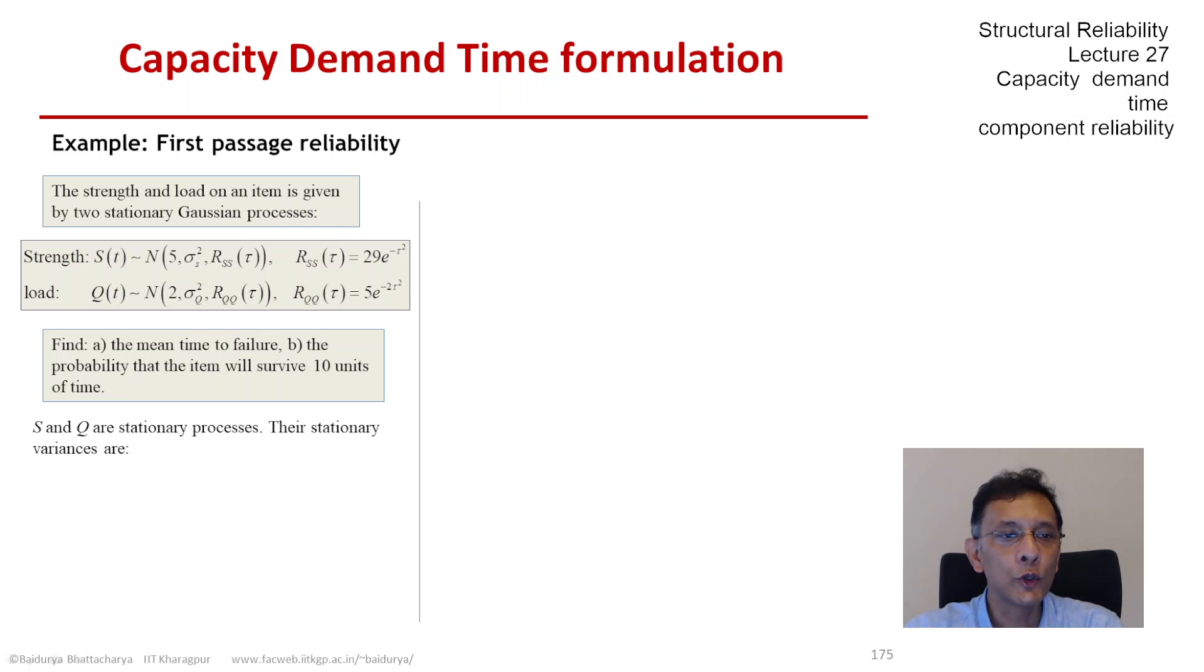The autocorrelation function R_ss is the expectation of the process and its counterpart at lag tau. When the lag is zero, we have the expectation of the process squared. So E[S²] is 29 and E[Q²] is 5.